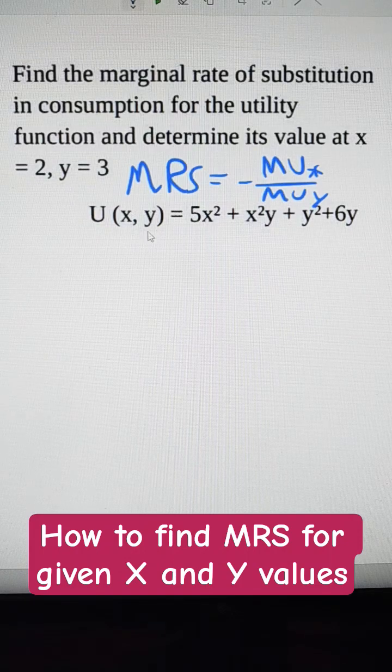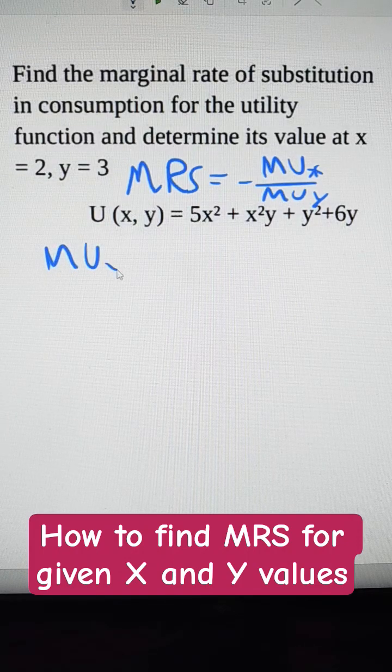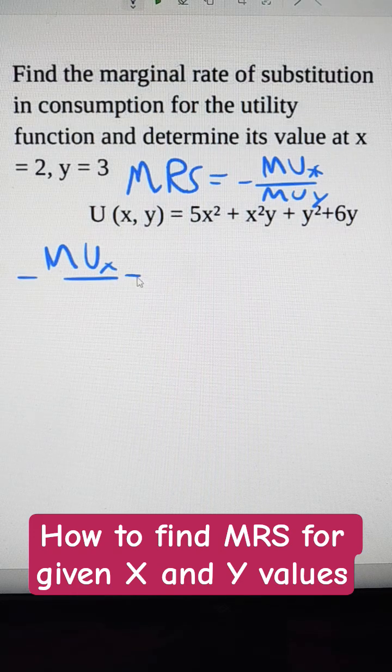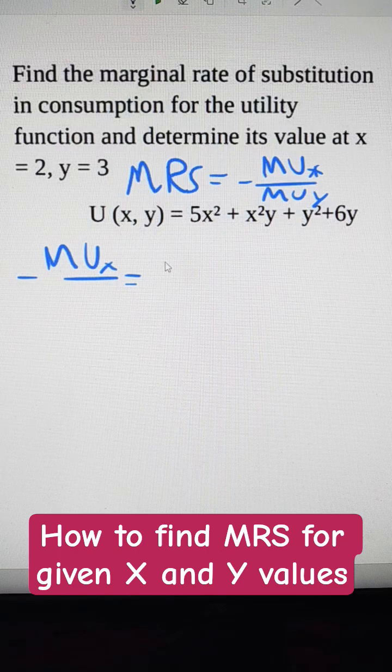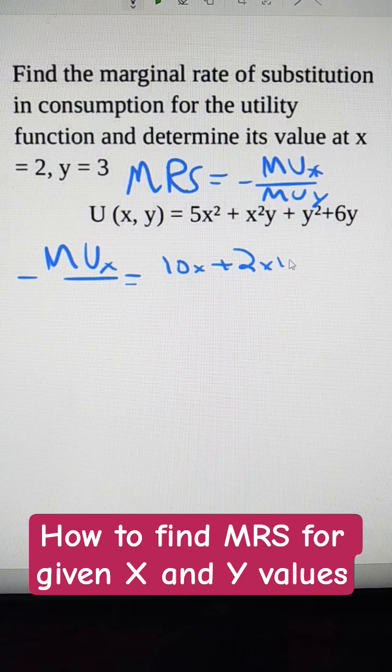Let's jump in and solve that. The marginal utility of x is the partial derivative with respect to x of that first product. We'll take that partial derivative: 10x plus 2xy.